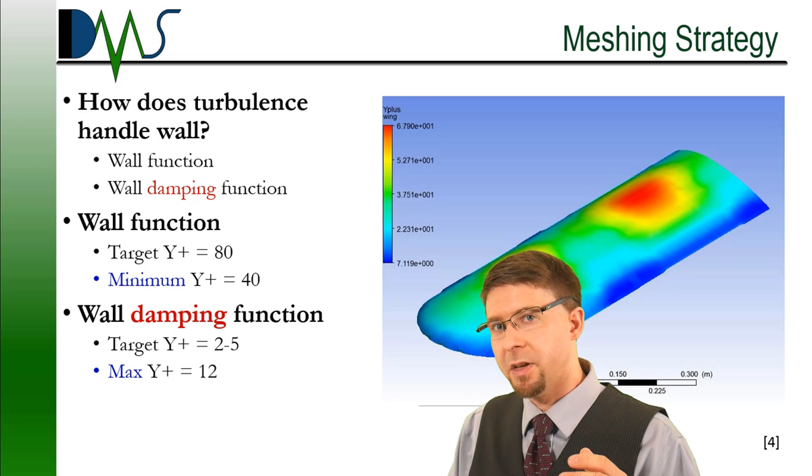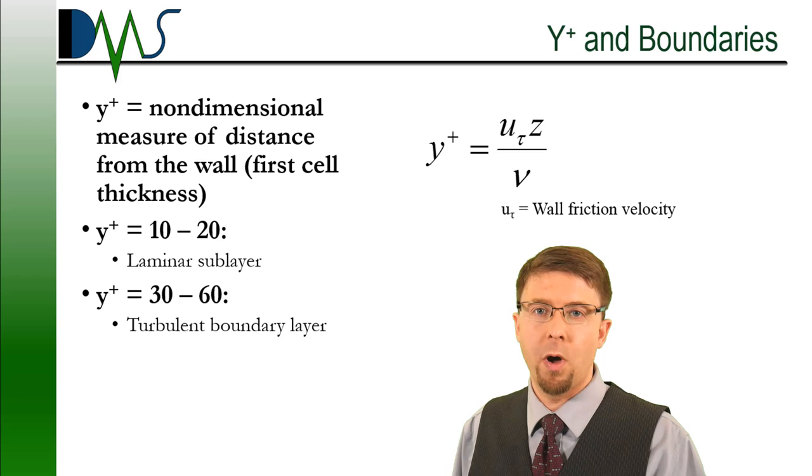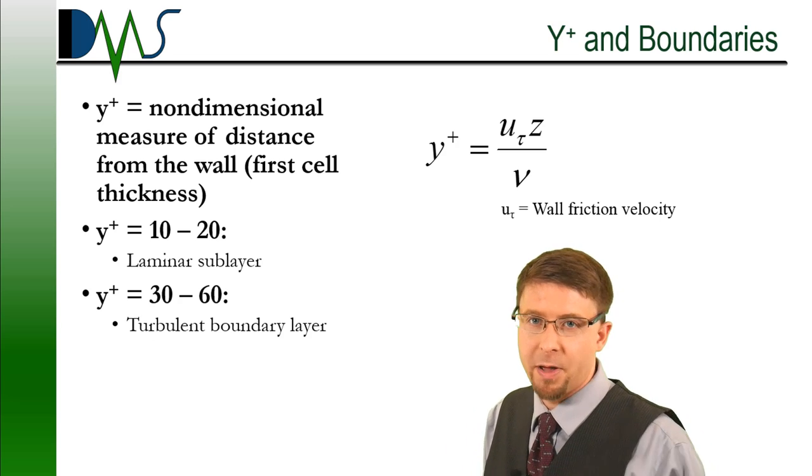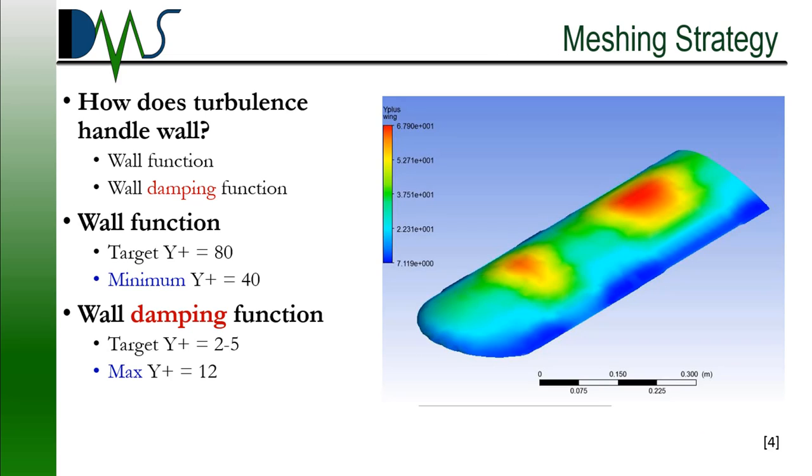You notice how I'm leaving myself a bit of a safety margin there compared to the Y-plus that I said for the boundary values here. I said that the turbulent boundary layer starts at around a Y-plus of 30. And I'm saying here that you really want to have your minimum Y-plus of at least 40. Notice I'm leaving myself a pretty wide margin there. And that's because you're going to get variations in your mesh. Your mesh isn't going to be perfect everywhere. So that's what I'm doing there for these recommendations.